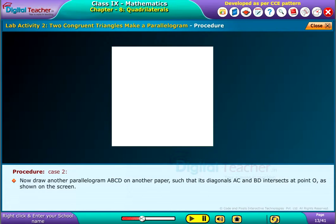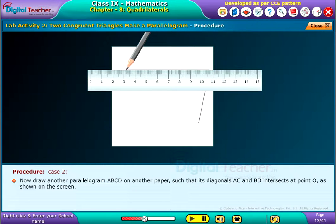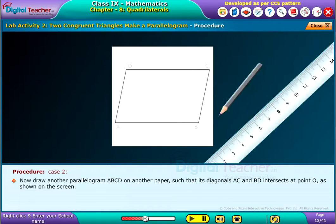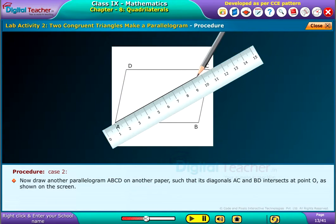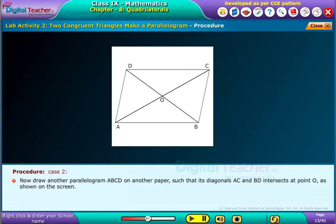Case 2: Now, draw another parallelogram ABCD on another paper, such that its diagonals AC and BD intersect at point O as shown on the screen. We can observe that four triangles are formed when the two diagonals intersect each other.